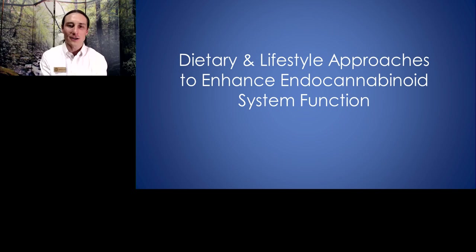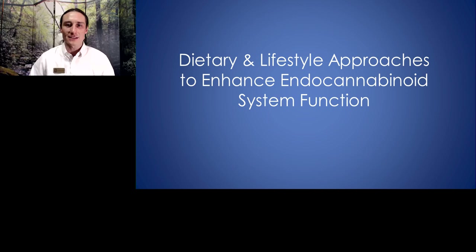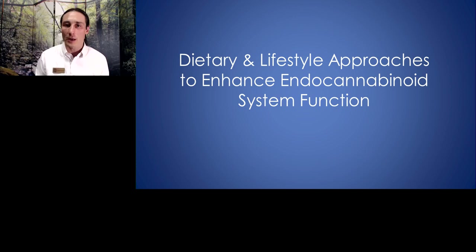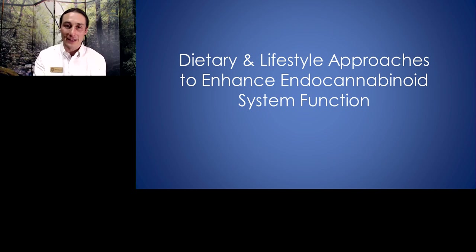Let's talk about ways to influence the endocannabinoid system without using cannabis, and then bring it all together. A lot of what I'm talking about tonight — using cannabis to prevent disease — is based on something we're already doing. We all have an endocannabinoid system. We're all producing molecules that function a lot like THC for the purpose of preventing disease and responding to illness and injury in a way that prevents those problems from becoming chronic. Everything we've talked about has to do with the function of the endocannabinoid system, and cannabis is clearly not the only thing that affects that function.